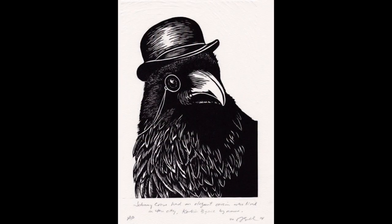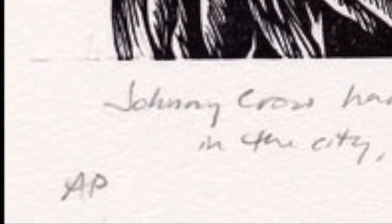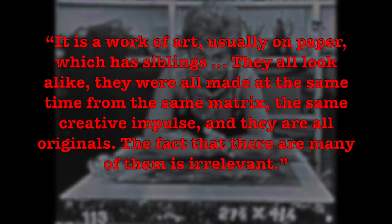An artist makes prints called proofs at various stages to see how the image on the matrix is developing. When the artist feels the stages are satisfactory, they make a few prints for their own record keeping and personal use — these prints are marked with AP, meaning artist's proof. One of the best definitions of an original print comes from June Wayne: 'It is a work of art, usually on paper, which has siblings. They all look alike. They were all made at the same time from the same matrix, the same creative impulse. And they are all originals. The fact that there are many of them is irrelevant.'